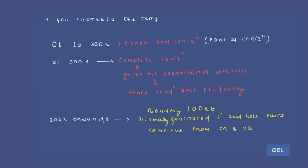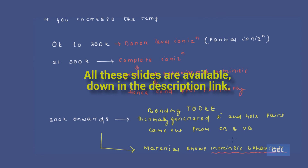So the availability of free electrons decreases. After some time, if you increase the temperature from 300K onwards, the material starts to show intrinsic behavior. Please remember: from 0 to 300K we have partial ionization, at 300K complete ionization and free electrons in the conduction band. But after 300K, the material starts showing intrinsic behavior — the value of your free electrons decreases.